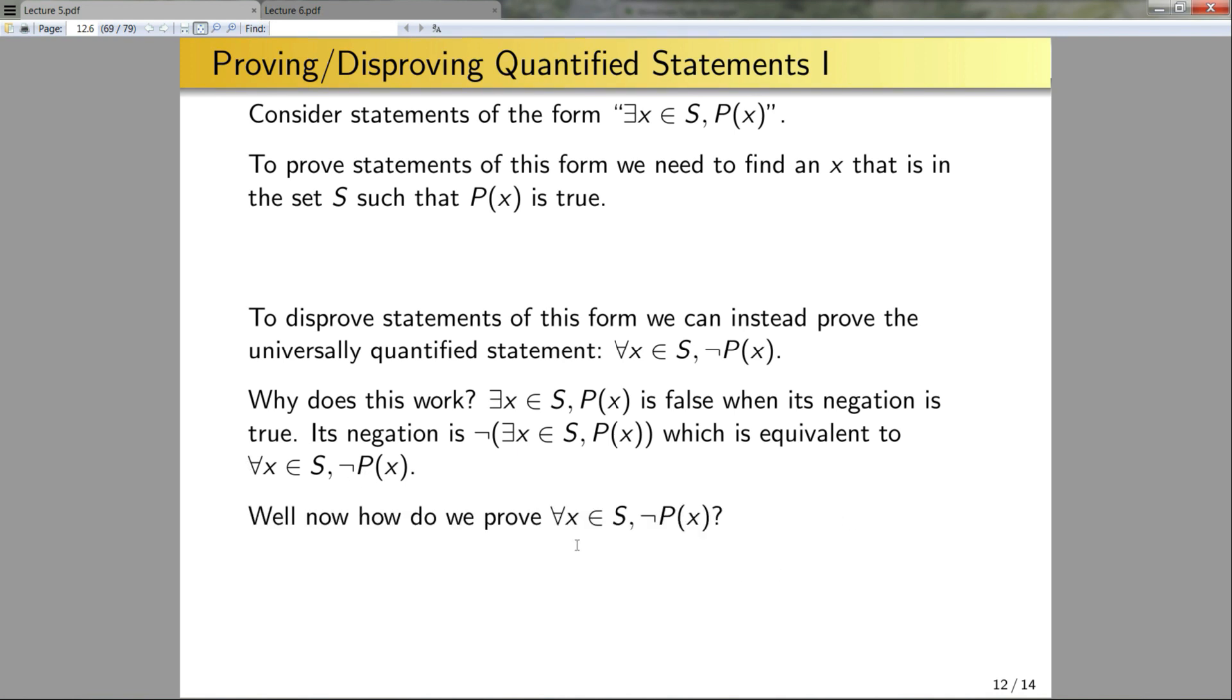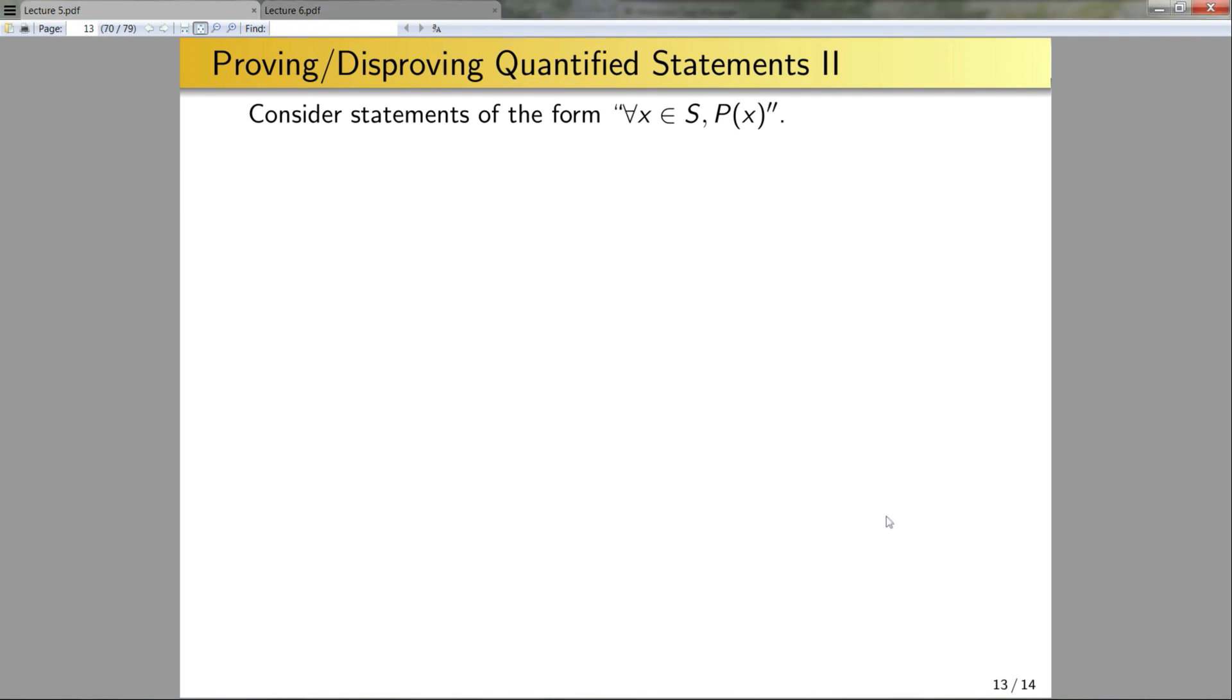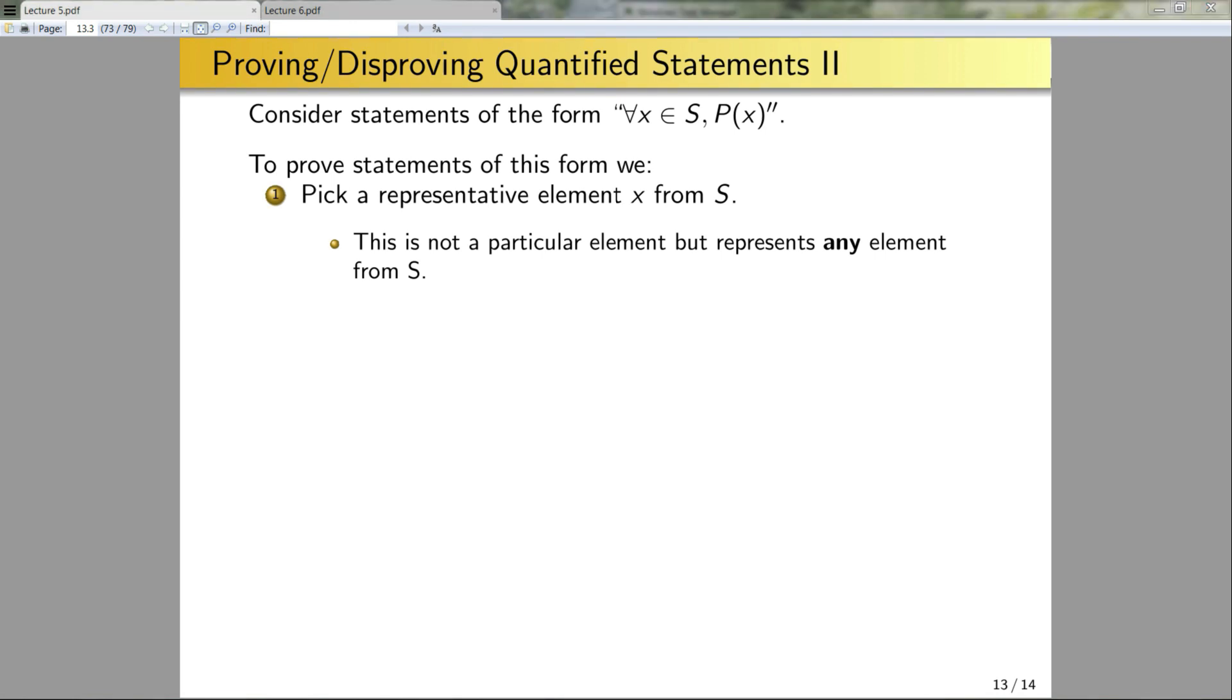So that opens the question, how do I prove statements of this form? I'm going to answer that on the next slide by proving statements of this form where instead of having not p of x, I just have p of x. But the technique that I'll talk about there carries over for this case. Okay, now let's consider statements of the form for all x in s, p of x. To prove statements of this form, we need to first start by picking a representative element x from the set s. So this is not any particular element of the set s, but it's an arbitrary element of the set s. So for instance, if s was the real numbers, you couldn't just pick, say, x is equal to 1 and show that it's true for that case. You need to show that it holds for all real numbers. So now after I've done that, I need to show that the open statement p of x is true for our representative by using properties that all of the elements of s have.